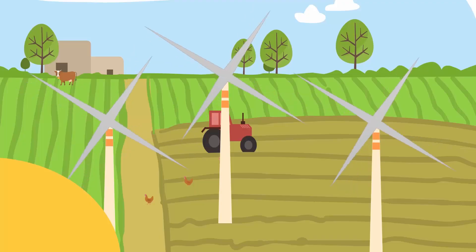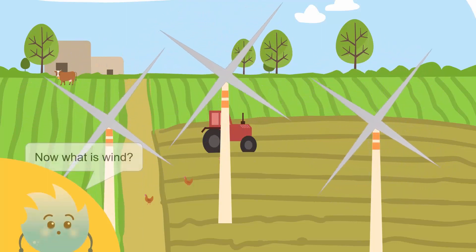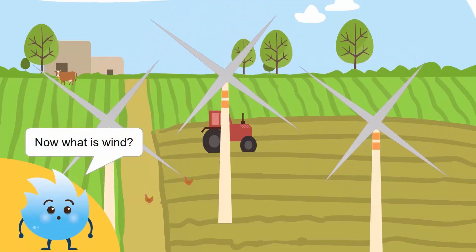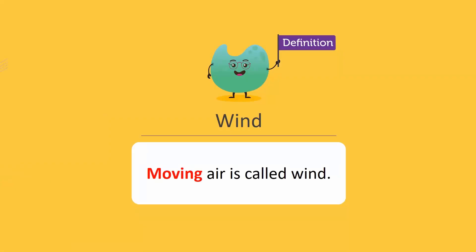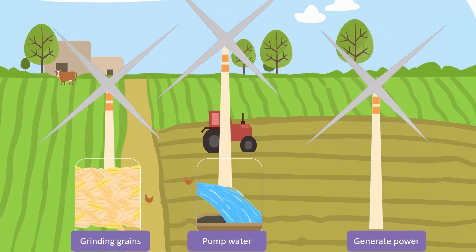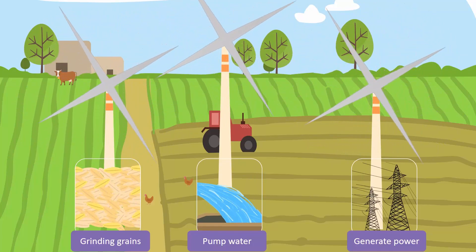Have you ever seen a windmill? It works with the help of wind. Moving air is called wind. People use windmill to grind grains, pump water and generate power.